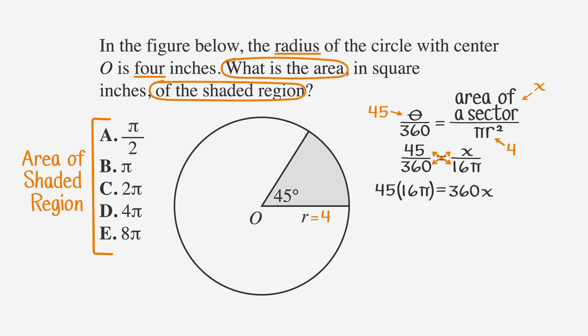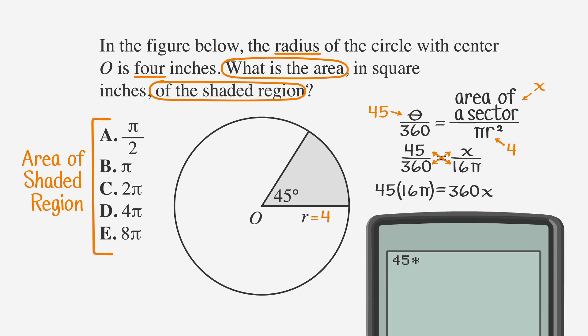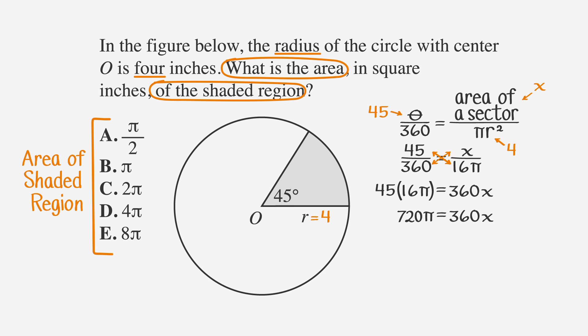We get 45 times 16π equals 360x. Using the calculator, let's multiply 45 times 16 to get 720. So 720π equals 360x. Dividing both sides by 360, we find that 2π equals x, which is choice C.